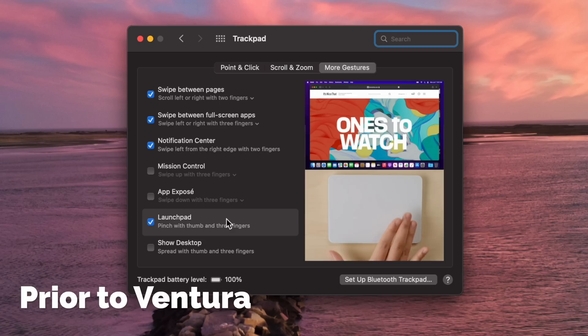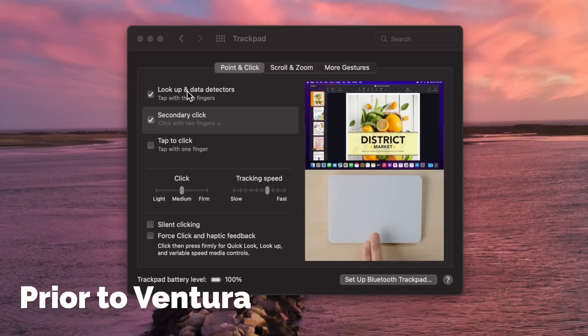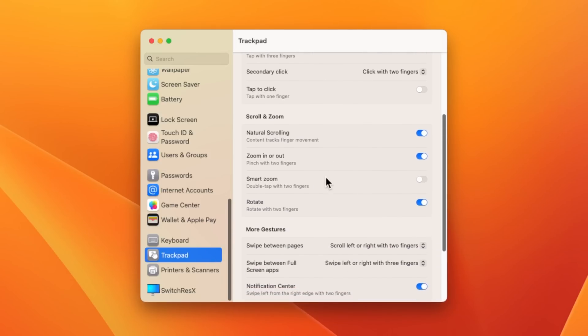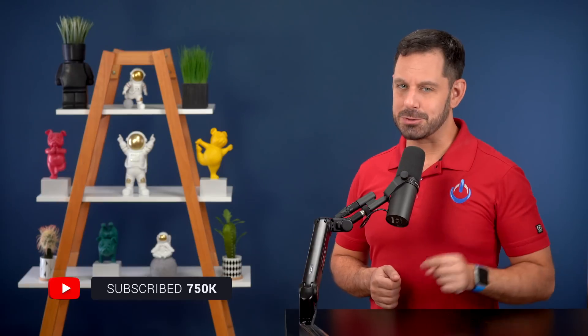As someone who works with a lot of people who are new to the Mac, I am well aware that one of the things that can be confusing to a new user is all of the different multi-touch gestures. In all of the previous Mac operating systems, there was a little video that would play so you could see exactly how to perform each multi-touch gesture. As you can see here in Ventura, those videos are gone. So you'll just need to return to my YouTube channel. Don't forget to subscribe.